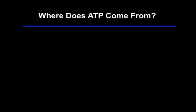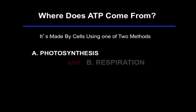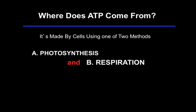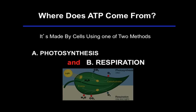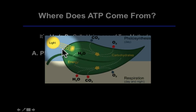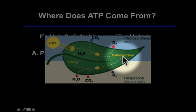Where does ATP come from? It's made by the cells using one of two methods. First is photosynthesis, which you're a bit familiar with. The other is respiration. Most ATP comes from respiration. All organisms do respiration; only some organisms do photosynthesis, but plants do both. Looking at a diagram of a leaf, light energy is captured by the plant and used to combine water and carbon dioxide to make carbohydrates — that's the food or chemical energy the plant makes. One byproduct is oxygen gas, given off as a waste product of photosynthesis.